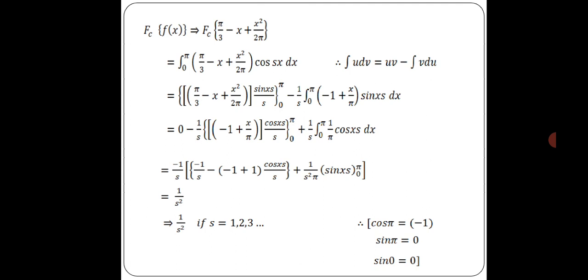The formula to apply is the integration by parts: integral of u dv = uv - integral of v du. That is Bernoulli's formula. So applying it: (π/3 - x + x²/2π) · sin(sx)/s evaluated from 0 to π, minus (1/s) integral from 0 to π of (-1 + x/π) sin(sx) dx. Next, applying the limit.